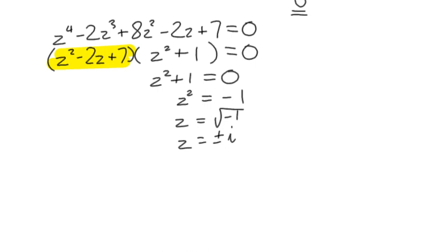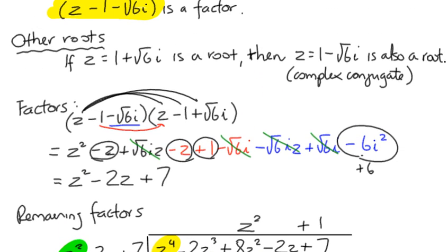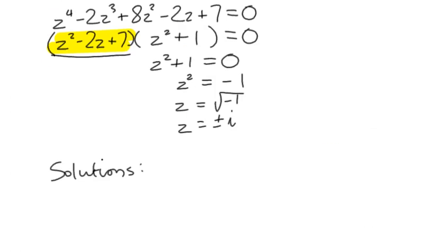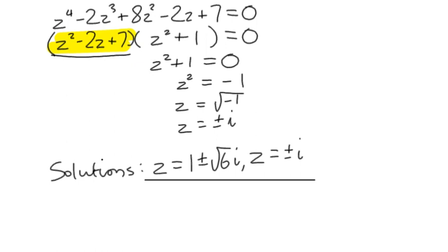We now have all four solutions. From the first quadratic: z = 1 ± √6i. From the second: z = ±i. We have four solutions to a quartic equation — the fundamental theorem of algebra wins again.